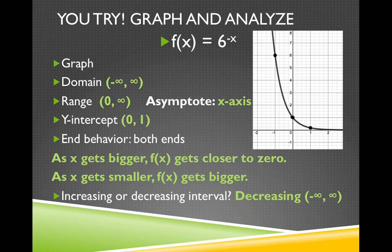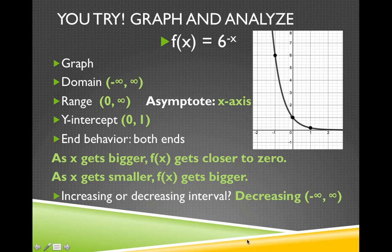Here are the answers to f of x equals 6 to the negative x. The graph is on the right. The domain is all real numbers. The range is from 0 to infinity. It has an asymptote at the x-axis, which is y equals 0. The y-intercept is 1. For end behavior: as x gets bigger, f of x gets closer to 0; as x gets smaller, f of x gets bigger. This is a decreasing function over the entire domain.